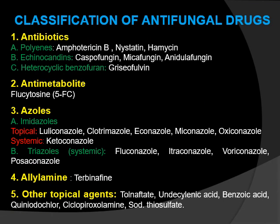Classification of Antifungal Drugs. The first group is antibiotics, which further includes subgroups: Polyenes, Echinocandins, and heterocyclic benzofuran. Examples of Polyenes are Amphotericin B, Nystatin, and Hamycin. Examples of Echinocandins are Caspofungin, Micafungin, and Anidulafungin. The example of heterocyclic benzofuran is Griseofulvin.